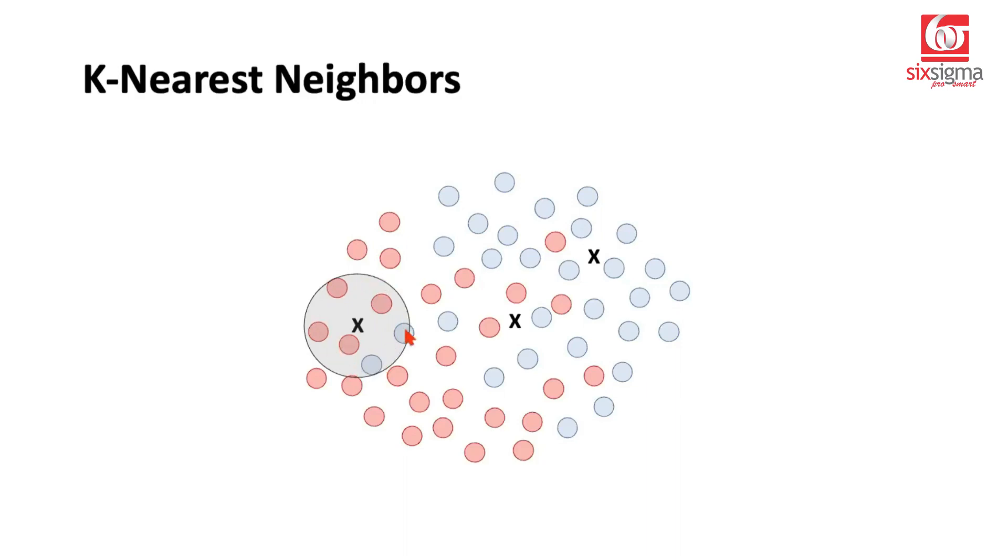By the way, generally we look for the number of points as an odd number because you can imagine if we go for an even number, there could also be a tie. For example, if there was one more blue point, you will say there are three reds and three blues. So how do we break the tie? So that could be confusing. So generally, as a practice, we refer to odd number of points as neighbors.